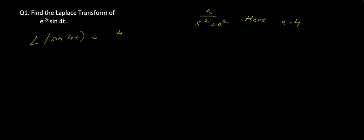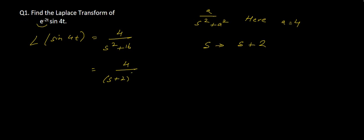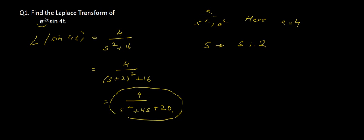So we will have 4 by s square plus 16. We also have the term e to the power minus 2t, so our s will become s plus 2. Accordingly, putting in our values, that will be 4 by (s plus 2) whole square plus 16. Simplifying this we get 4 by s square plus 4s plus 20. So our Laplace Transform of the equation is this.